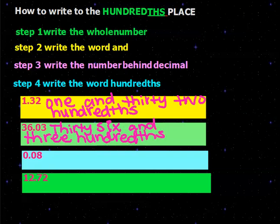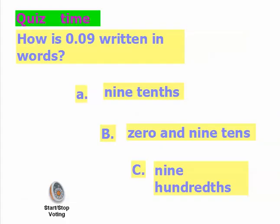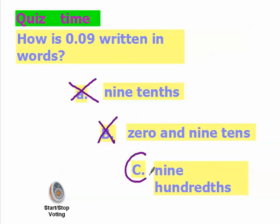For your next homework problems, write numbers 3 and 4 in words. What is 0.09 written in words? We have no whole numbers, a decimal, no tenths, but nine in the hundredths place value. So we say the number first — nine — and then the word hundredths. Nine tenths doesn't work, zero and nine tenths doesn't work. Nine hundredths is the correct answer because nine is in the hundredths place value.